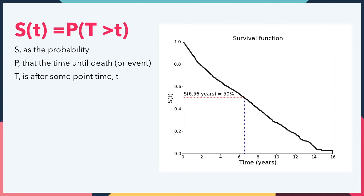Notice in the example here, it starts at one and tends to zero, but never actually hits zero, meaning that there is still a slim chance of surviving past 16 years. Here we can see that the median tenure is just over 6.5 years. Put another way, workers have a 50% chance of leaving within the first 6.5 years, which is actually not a bad tenure.